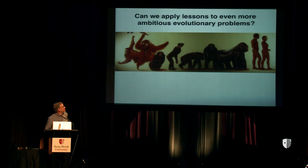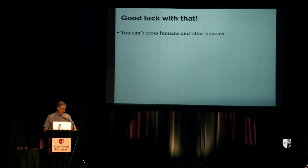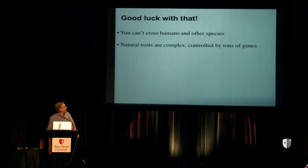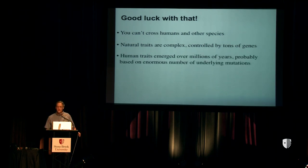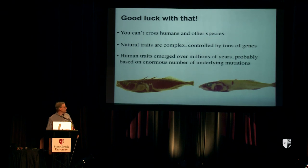Which brings me to the last topic: whether we've learned enough about how stickleback evolution is happening to begin tackling even more ambitious evolutionary problems. One problem we've been quite interested in is the molecular basis of becoming human — a nice humble project of trying to identify molecular events that underlie the distinctive traits in our own species. There are lots of reasons to be skeptical: we obviously can't cross humans and other species, it involves traits probably complex and controlled by many genes that took millions of years to evolve. On the other hand, some of those comments are exactly what we used to hear about how stickleback evolution was going to be impossible to study — and what we've actually found is that it is complicated, but some effects are big.